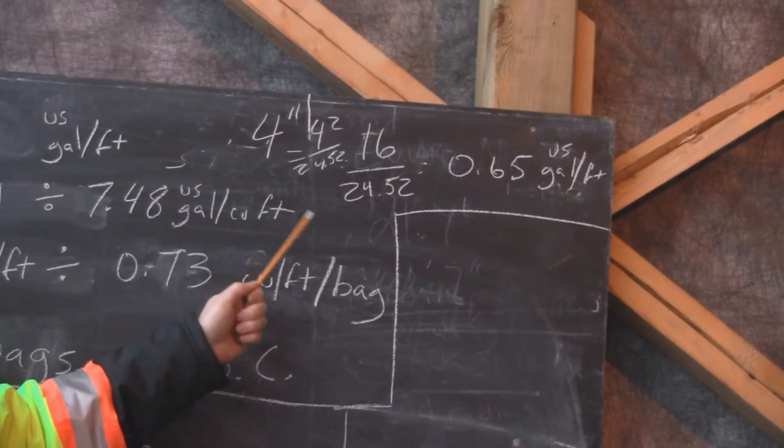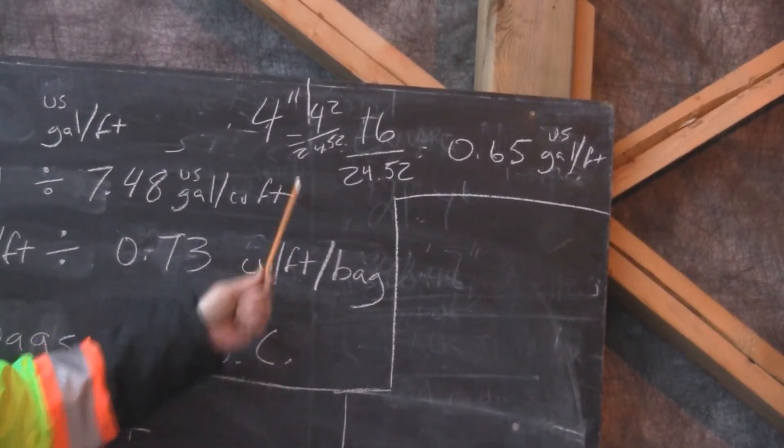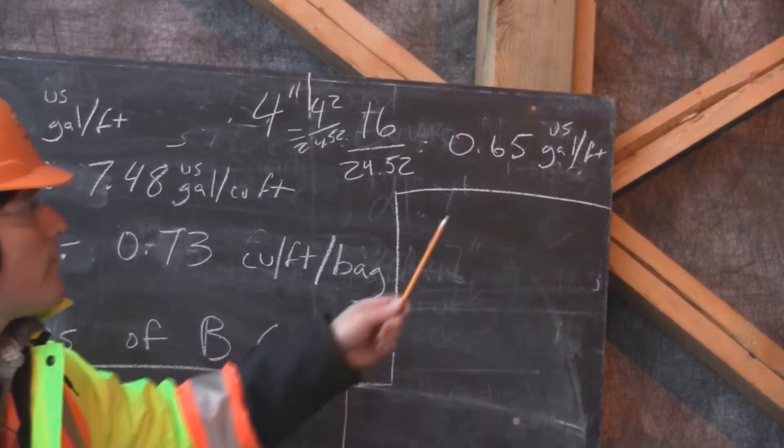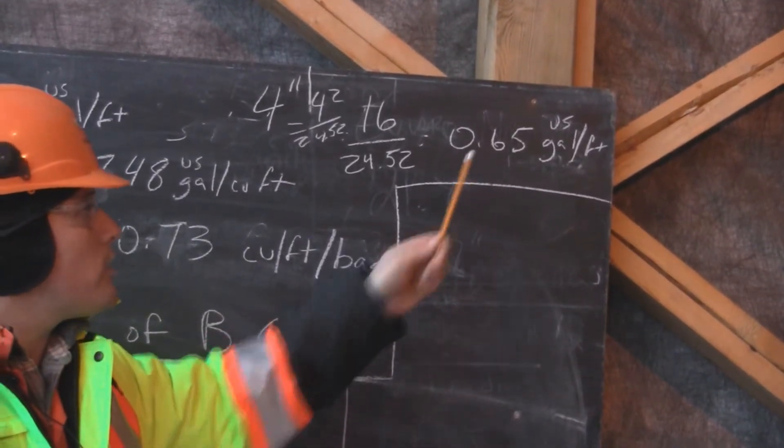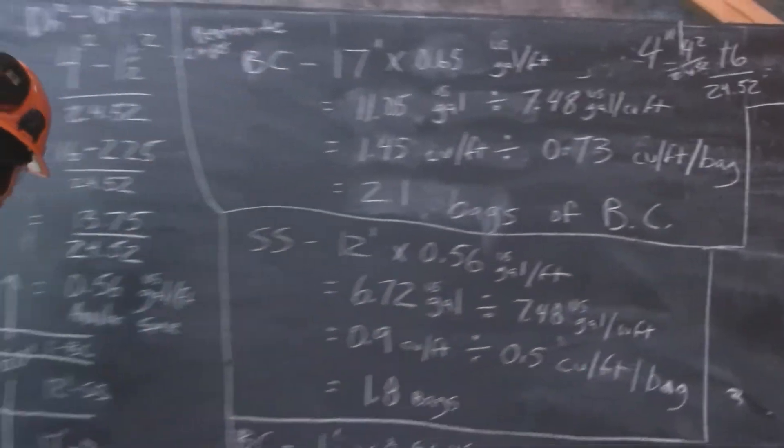It results in 16 over 24.52, giving us a total of 0.65 US gallons per foot of annular space of open hole in the bottom here.